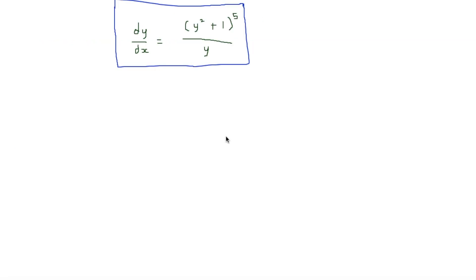Our next question is slightly more difficult. It is that dy by dx is equal to y squared plus 1 to the power of 5 over y. To start this off we're going to again separate the variables — multiplying everything by dx to give dy is equal to y squared plus 1 to the 5 over y times by dx. Then we divide everything by y squared plus 1 to the power of 5 over y.